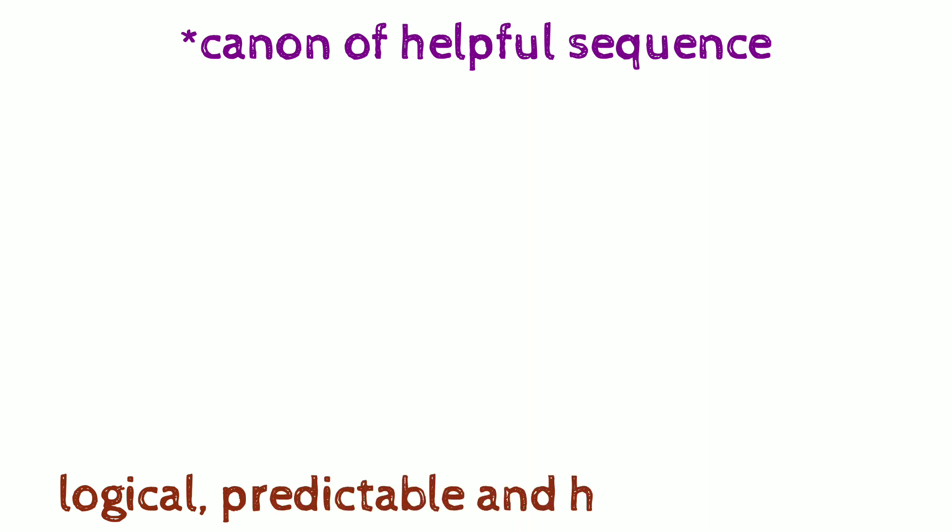The next canon is the canon of helpful sequence, which means the sequence which you prepare, the arrangement which you prepare, the entities should be in helpful order. This means it should be in historical manner, events should be in chronological order, or the array should be in alphabetical order.